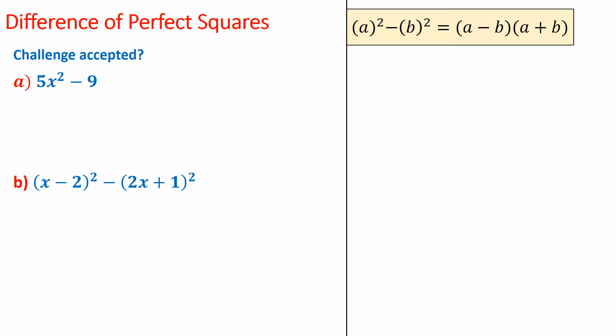Difference of perfect squares. I've given you the rule here. Your aim when you're factorizing is you want to get something squared minus something squared. That's your goal. Right now we don't have that. If you have a look at it right now, we've got 5x all squared, then minus 9. That's not the same as what we want — something squared minus something squared. So the issue is the 5.